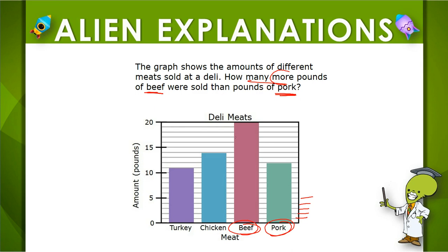This first bar is easy — it just ends at 20. The second one we can count from the 10: here's 10, 11, 12. And now we just need to know the difference.